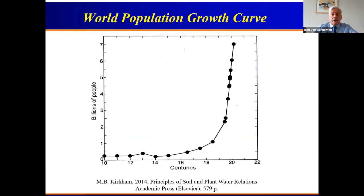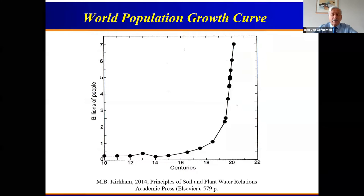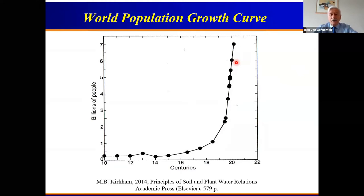I want to first start with what I would call an abstract of my talk, which is a plot published in a book by Mary Beth Kirkham about the world population. You can see here that the number of people on this planet were about one half billion, but then in the 17th, especially 18th and 19th century, it started going up. This is probably correlated, although I don't want to say that too loudly, with the challenges we have in managing this planet.